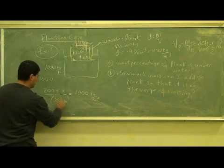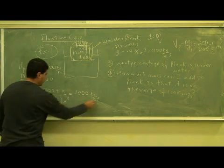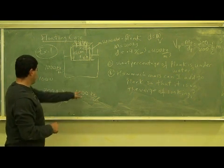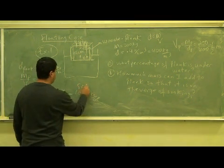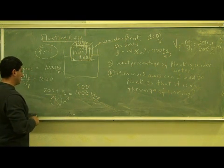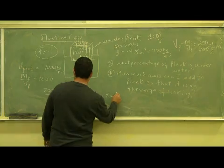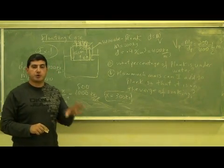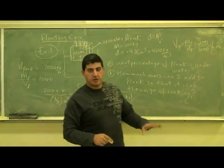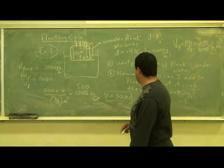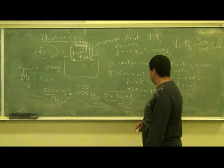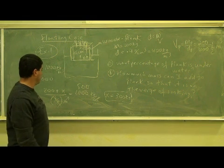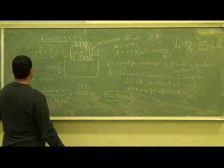Moving the 0.5 over gives 200 plus x equals 500, so x equals 300 kilograms. That means I can only put 300 kilograms on top of this plank before it's on the verge of sinking — that's about three or maybe four people depending on their mass. Now let's do another example, example two, with the floating case.